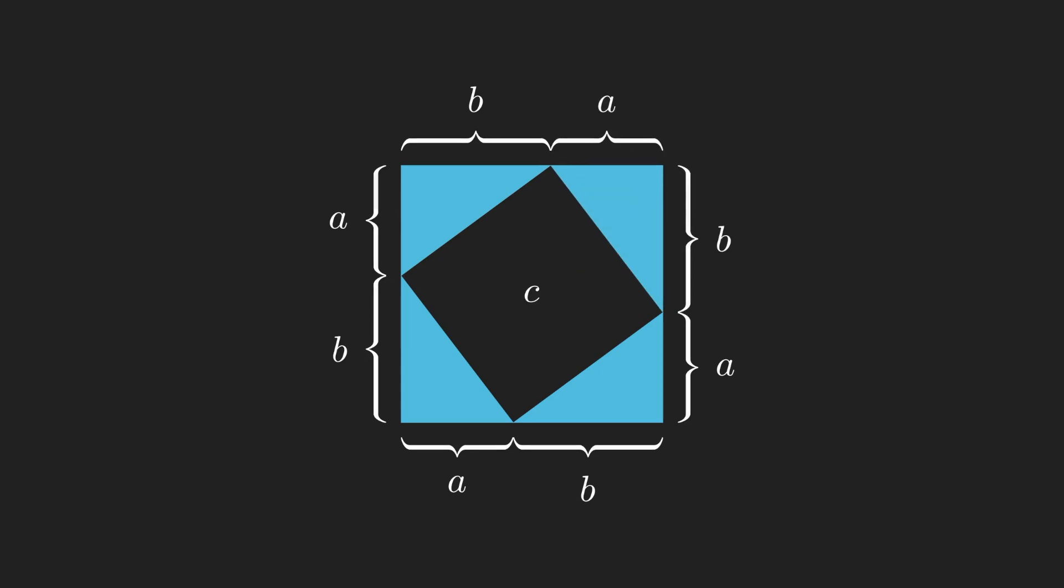With the side lengths A plus B and the area A plus B all squared, the inside of this structure is another square with the side length C and therefore the area C squared.